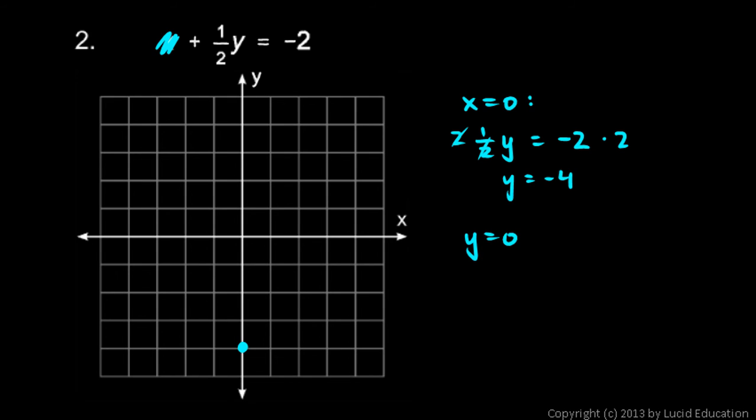And then I'll let y equals zero. And if y equals zero, then x is negative 2. So that's my line. There you have it.